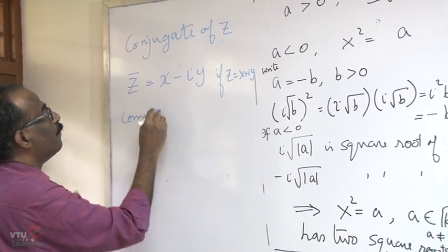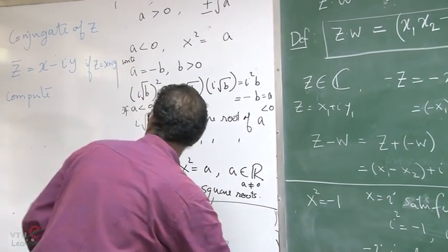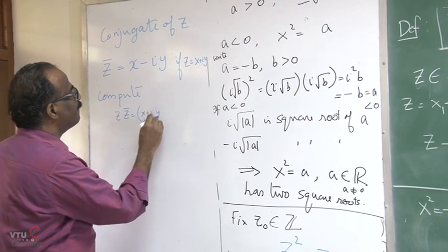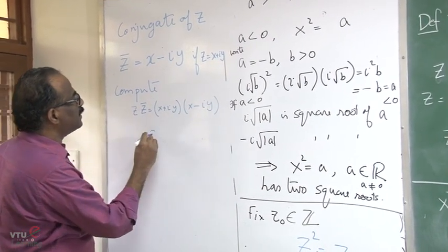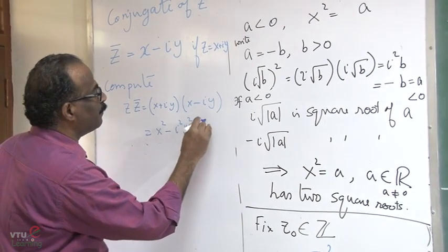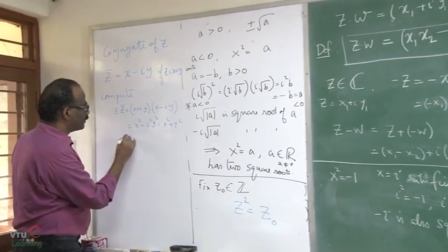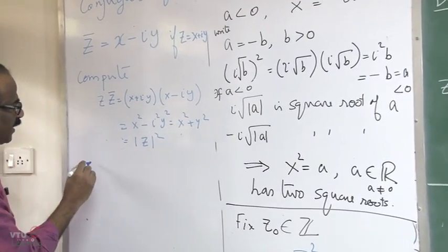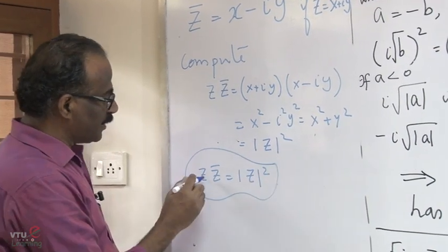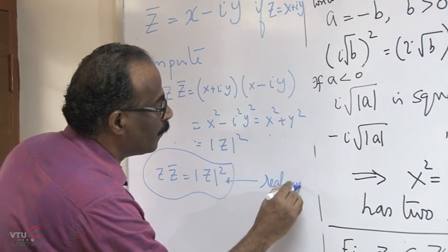Now let me motivate division. Compute z·z̄: that is (x + iy)(x − iy) = x² − i²y² = x² + y² = |z|². So we have the important relation z·z̄ = |z|². Note that even though z and z̄ are complex numbers, their product z·z̄ is always a real number.